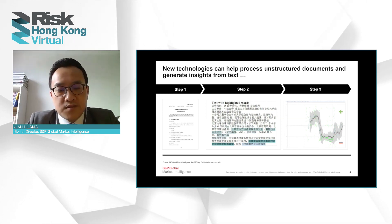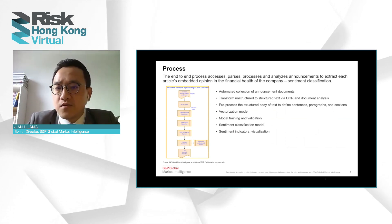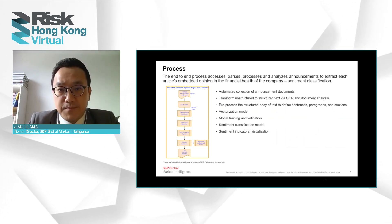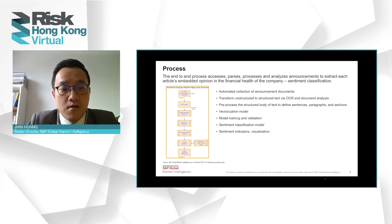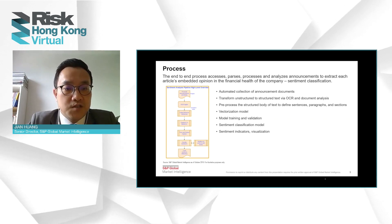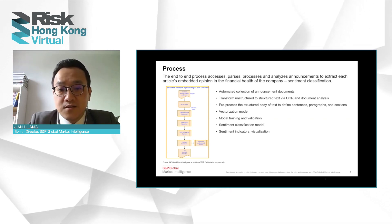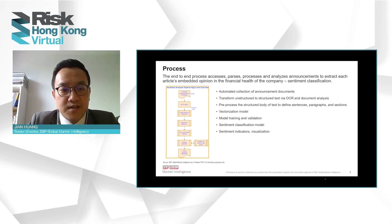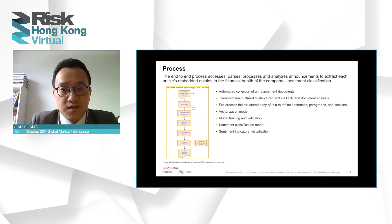This slide describes the end-to-end process to assess, parse, process, and analyze announcements to extract the embedded opinion of each article in terms of the financial health of the company. The left-hand side provides a high-level overview of the typical workflow: automated collection of announcement documents, transforming unstructured to structured text via OCR and document analysis, preprocessing the structured body of text to define sentences, paragraphs, and sections, followed by vectorization, model training and validation, sentiment classification, and finally sentiment indicators and visualization on the platform.